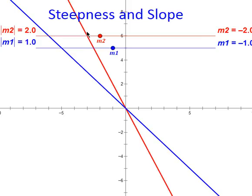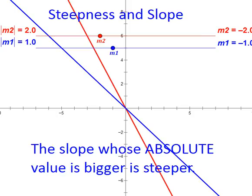So, again, anytime we're dealing with steepness and slope, it's really simple. We see the slope whose absolute value is bigger is steeper. Similarly, the slope whose absolute value is smaller is flatter. So, that's all you really need to know about steepness and how it relates to the number representing slope.